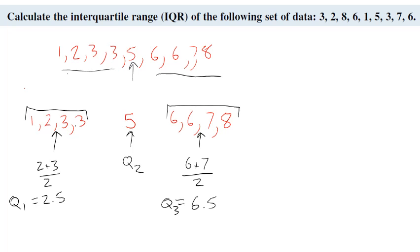Then lastly, to find your interquartile range, take your largest quartile, which is Q3, minus 2.5, minus 2.5, equals 4.